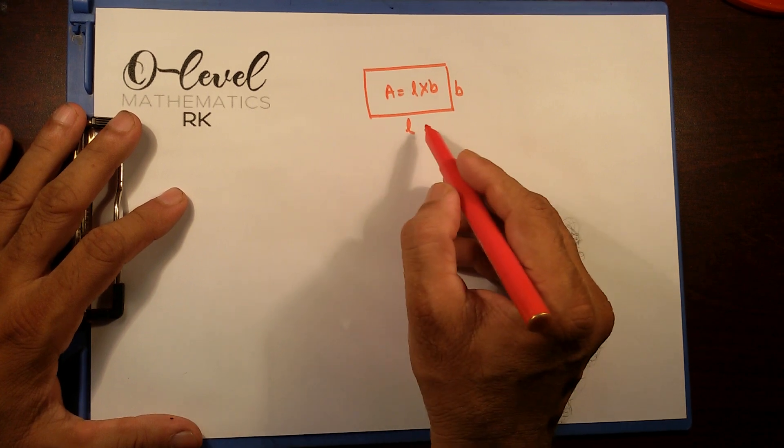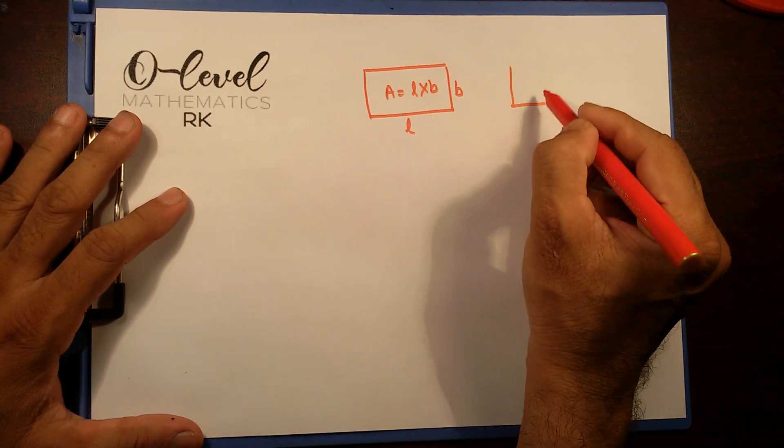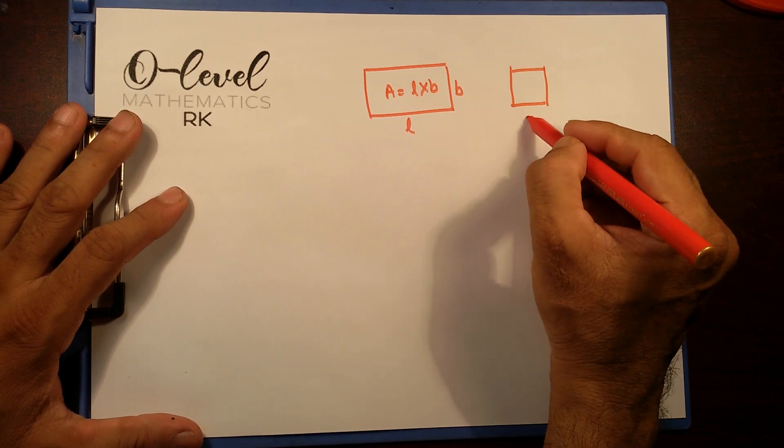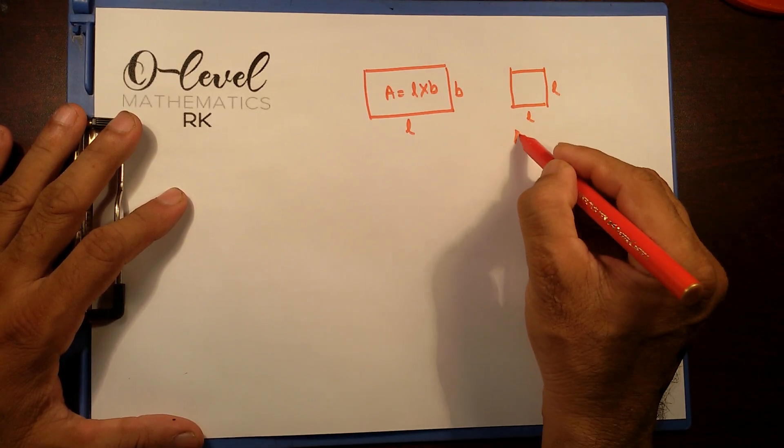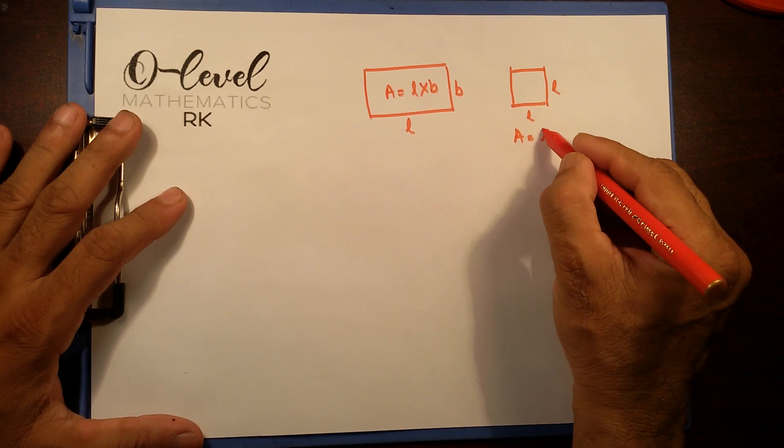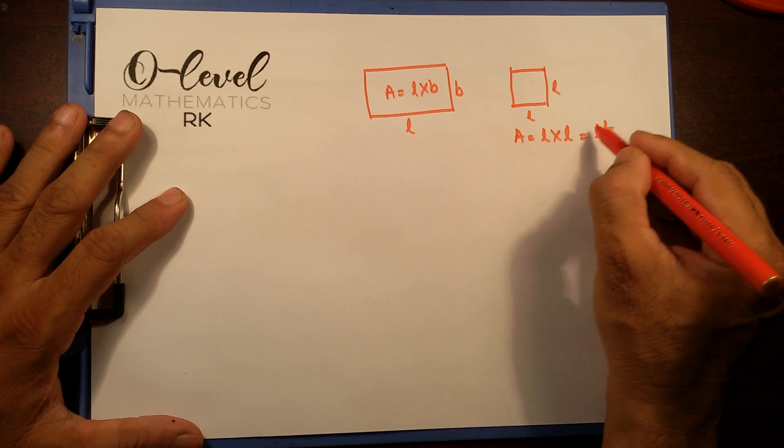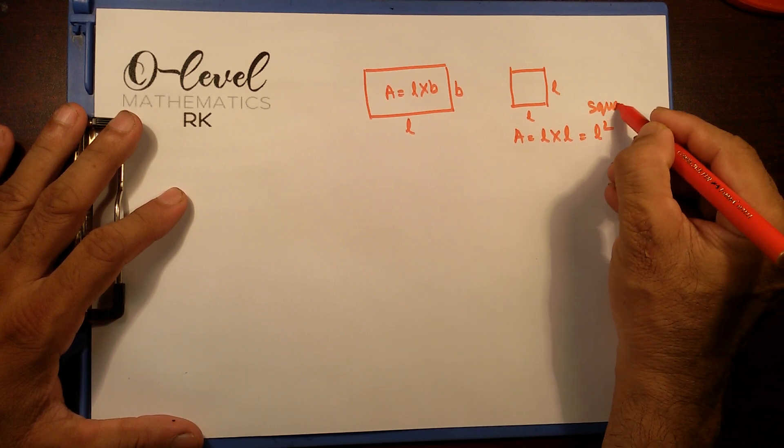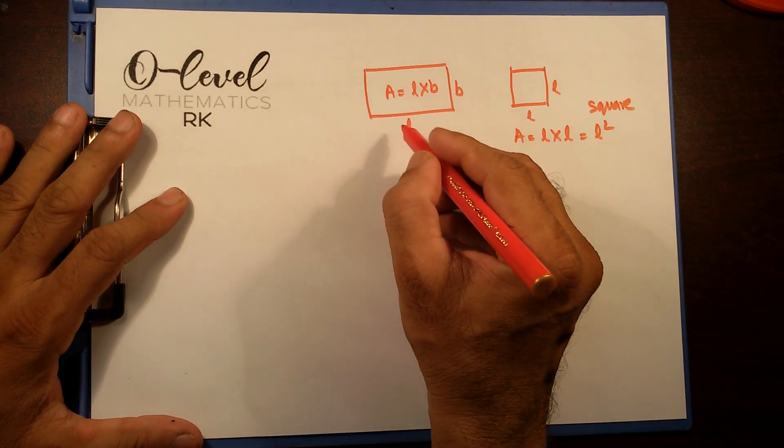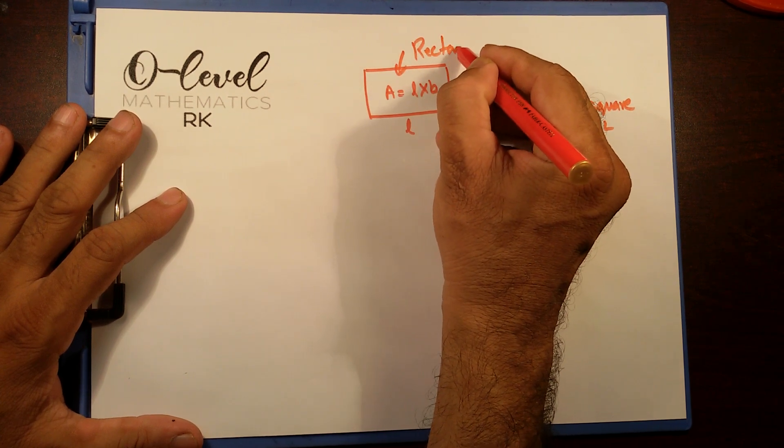Now, if I have both length and breadth equal, let's say it's like this, that's L and L. So area is going to be, instead of length into breadth, I have length into length. So it's going to be L square. That's area of square. And this is area of rectangle.